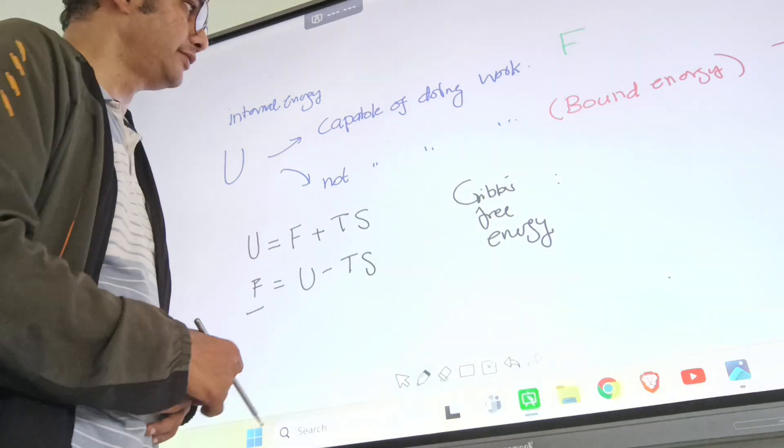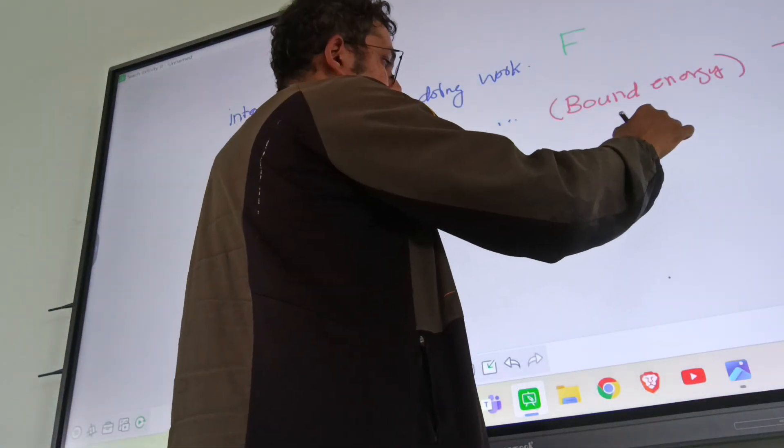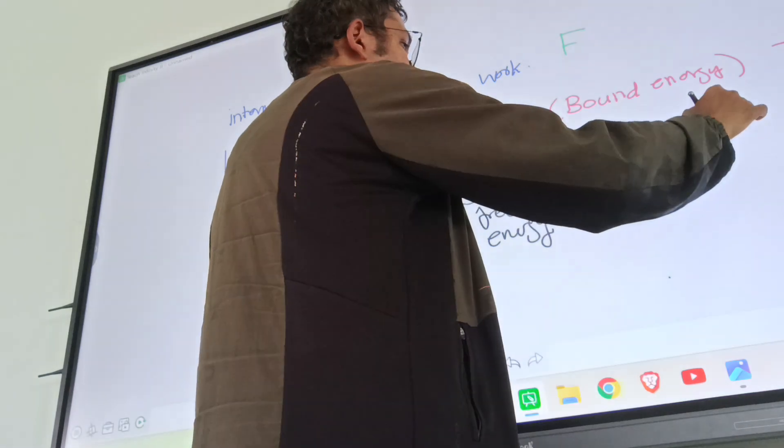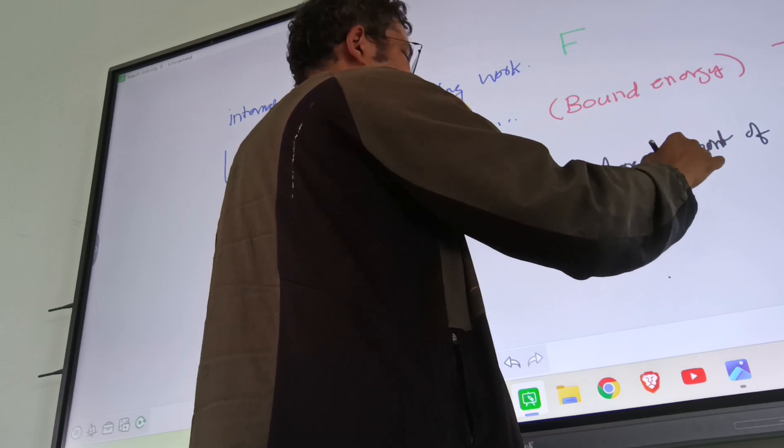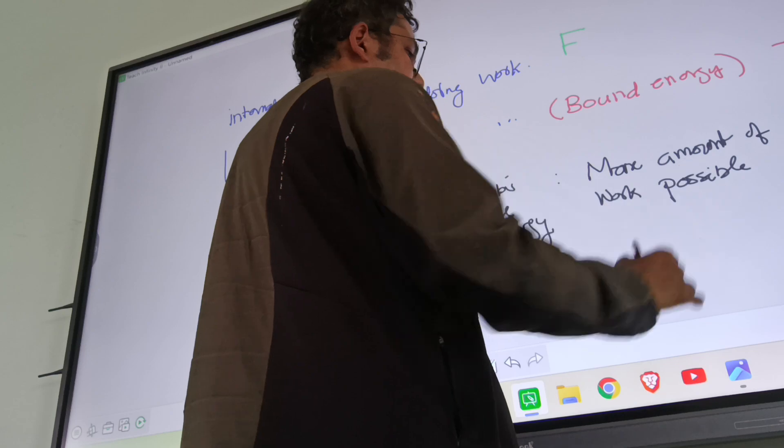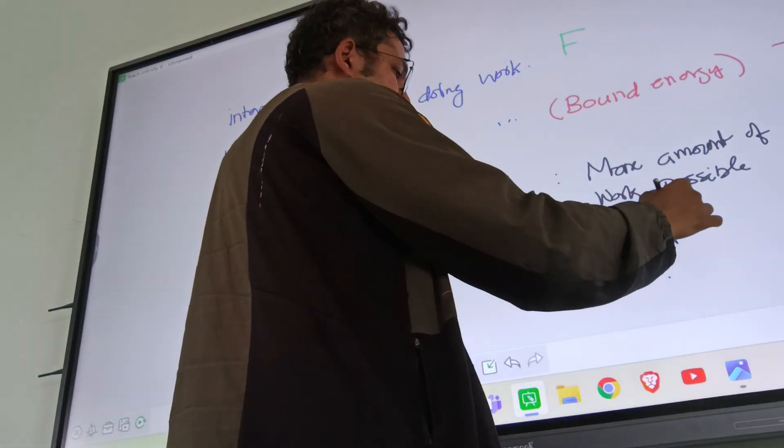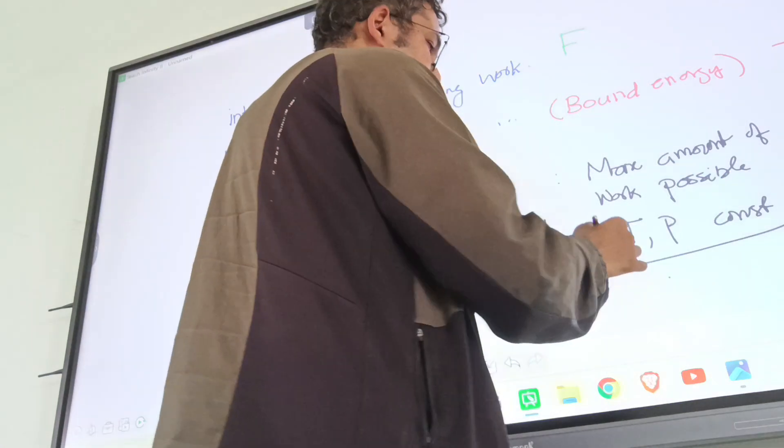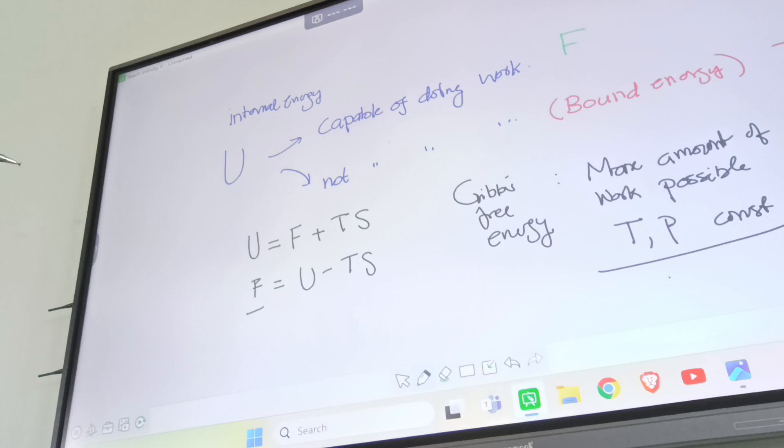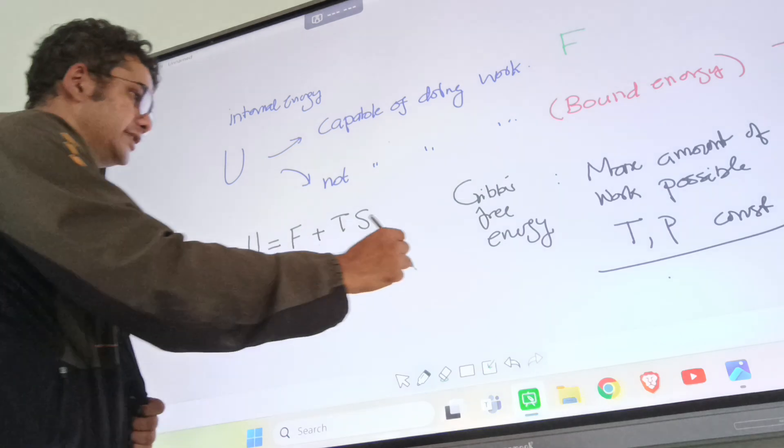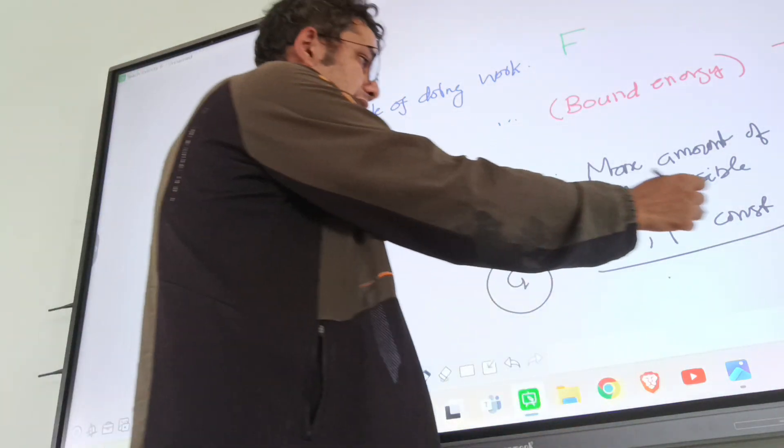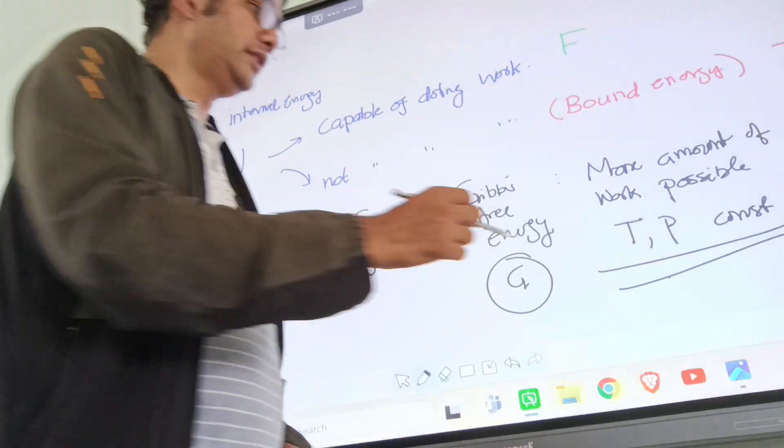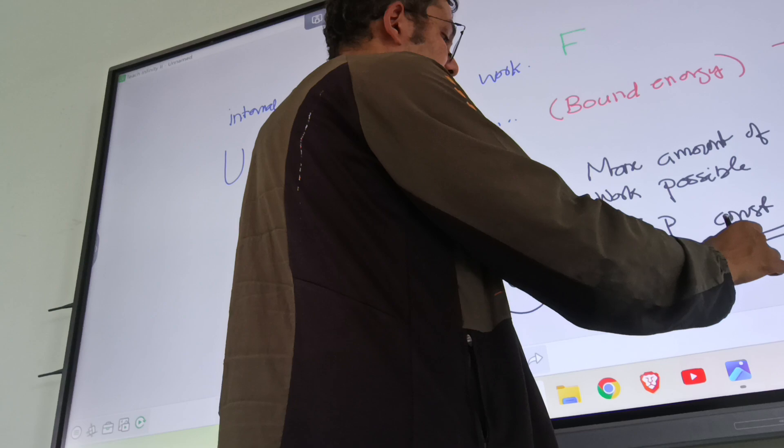So you can see that the maximum amount of work possible by a system when the temperature and the pressure are constant, that is the maximum amount of work. This is Gibbs free energy. Now the same condition is applied with the T and P constant, which is also for the first order phase transition.